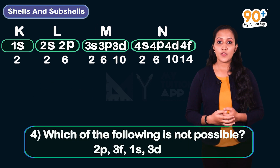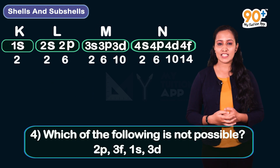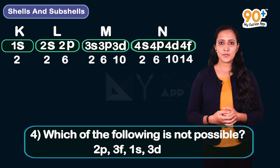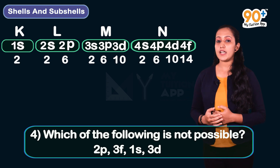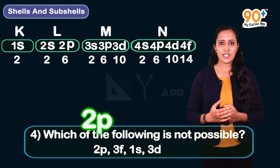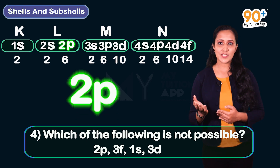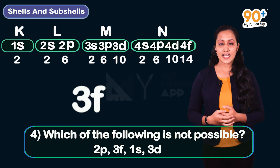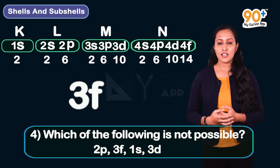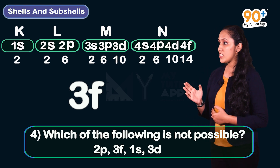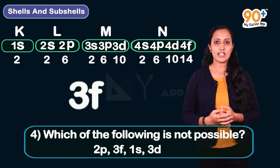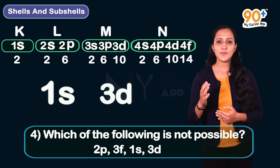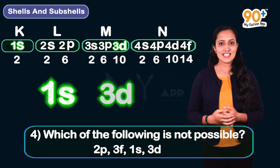Fourth question: Which of the following is not possible? We compare each option with the flowchart. The first option, 2P (P subshell in second shell), is possible. The second option, 3F (F subshell in third shell), is not possible because the M shell has no F subshell. So the answer is 3F.